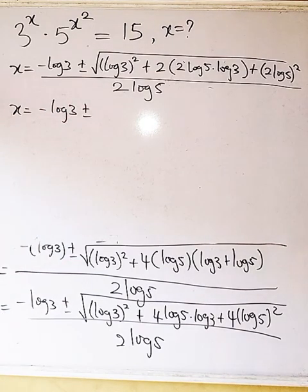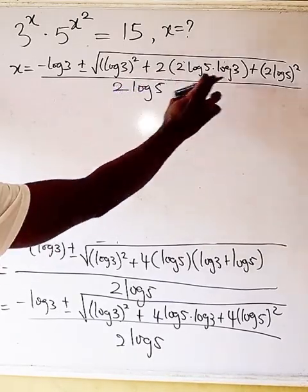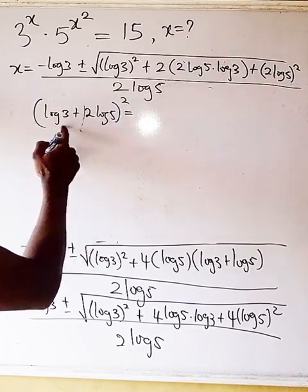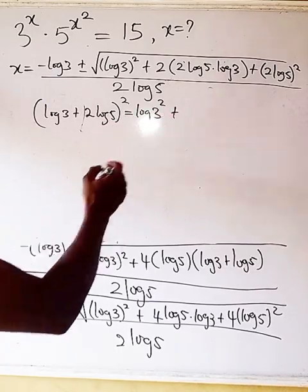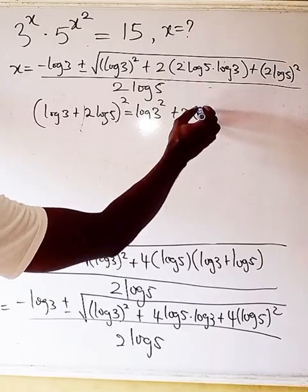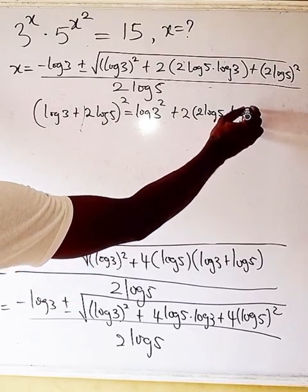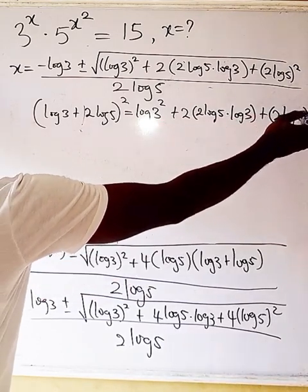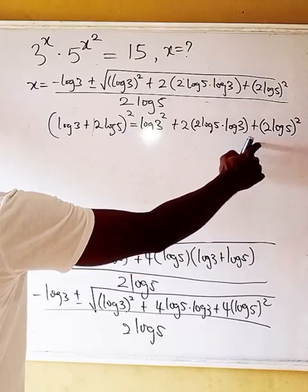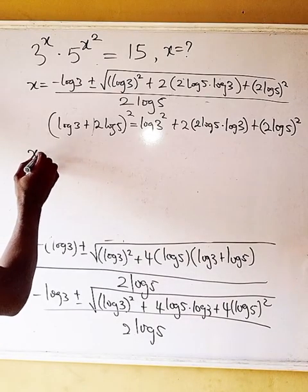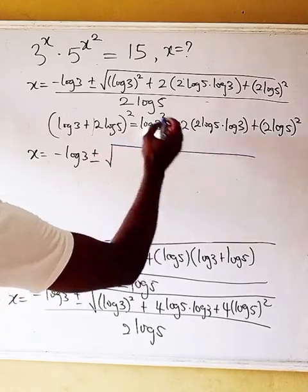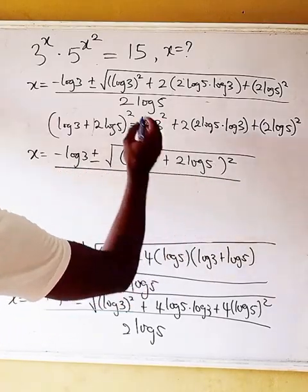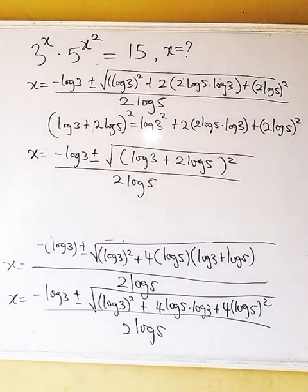Now we can see this matches the expansion of (log 3 + 2·log 5)² — that is exactly what we have inside the radical sign. So we get x equals minus log 3 plus or minus (log 3 + 2·log 5), all divided by 2·log 5.